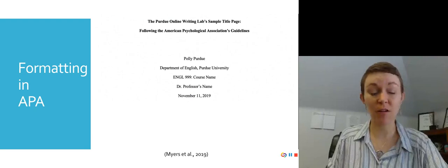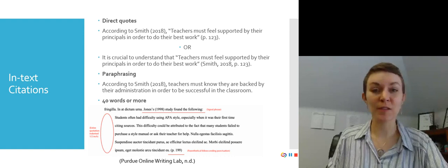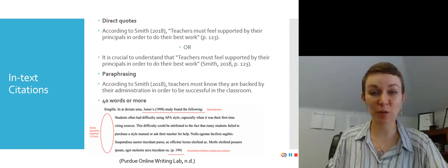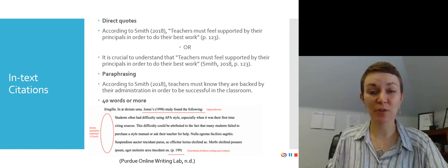The second item is in-text citations. This is where you provide the information for any quotes or paraphrases you use in your paper. In APA, they put precedent on the year something is published. So you will see throughout all of these examples that you will find the year if it is available.